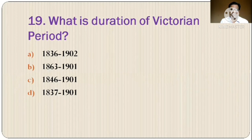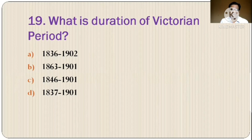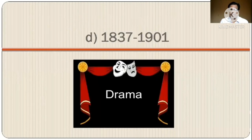Question 19: What is the duration of the Victorian period? The options are: A) 1836 to 1902, B) 1863 to 1901, C) 1846 to 1901, D) 1837 to 1901. The correct option is option D, 1837 to 1901.